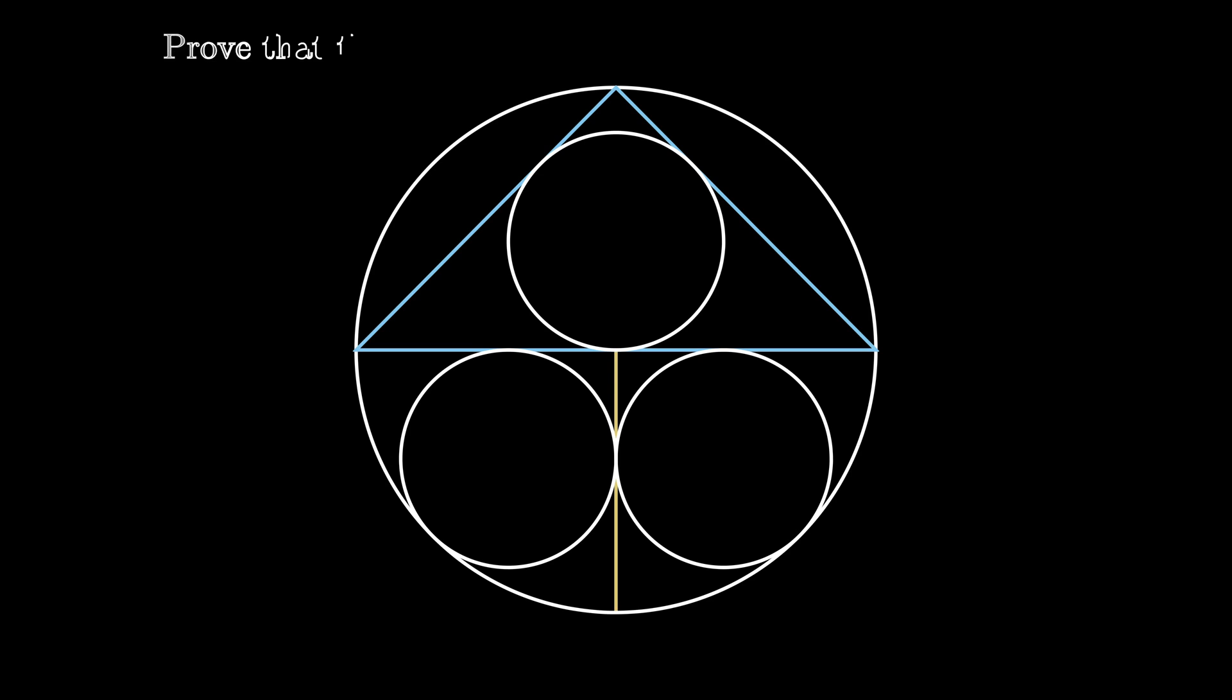The problem in the journal asks you to prove that these three small inscribed circles are all congruent. Pause the video and think about this before I reveal one possible answer.